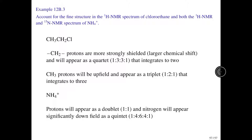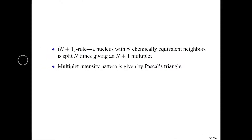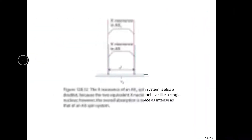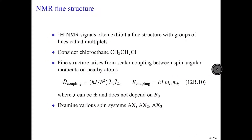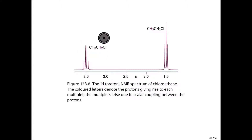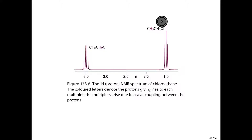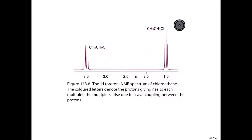Going back to the chloroethane spectrum, we can now explain it. The methylene protons appear as a quartet because the neighboring methyl group contains three chemically equivalent protons — n+1 = 4. The methyl group appears as a triplet because it has two equivalent methylene neighbors — n+1 = 3. The overall intensity ratio should be 2:3, since the methylene resonance corresponds to two equivalent protons and the methyl resonance corresponds to three.